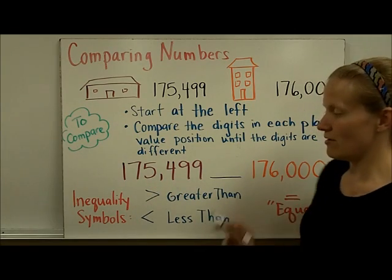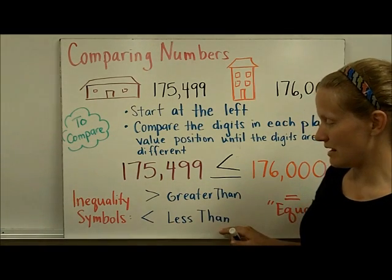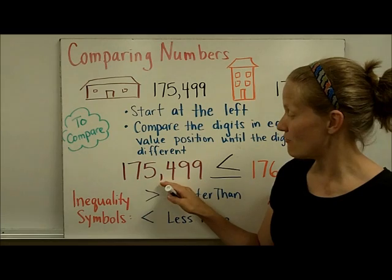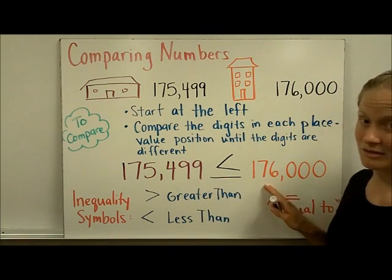So this is the bigger number. And we would use this sign, which stands for less than, to say that 175,499 is less than 176,000.